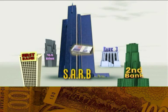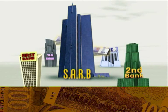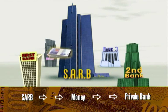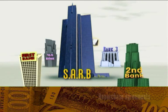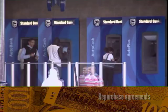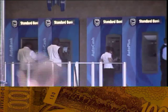When private banks need to borrow money to finance their shortfalls or deficits, they do it by borrowing from the central bank. This is done through repurchase agreements between the South African Reserve Bank and the private bank in question.